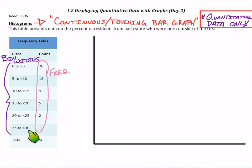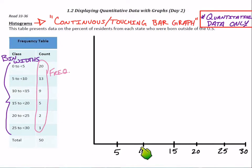I'm going to start by putting 15 smack dab in the middle, then make tick marks for each level of 5 — 5, 10, 15, 20, 25, and 30. So I've got my bins here, each bin width is 5, and that's where my bars are going to go.